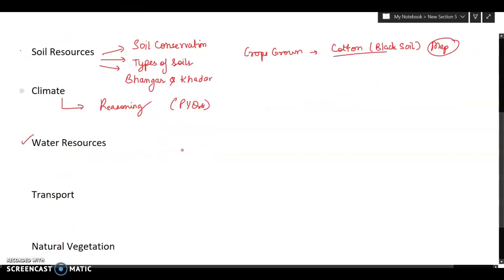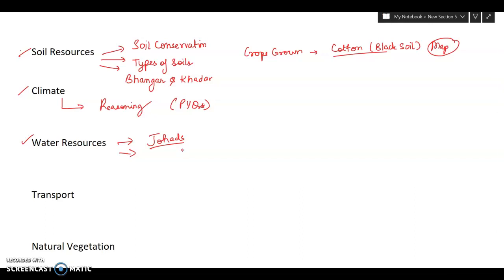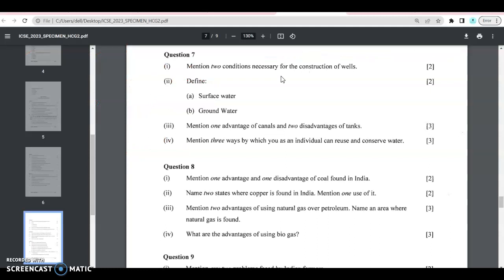Then about water resources is the chapter you can do. See, they have different types of water saving conservation systems like johads, right? Then for rainwater harvesting, the procedure and how can you save water, conservation. I'm referring to this specimen paper because this is the kind of question paper you expect. For example, define surface water, groundwater, mention advantages and disadvantages.